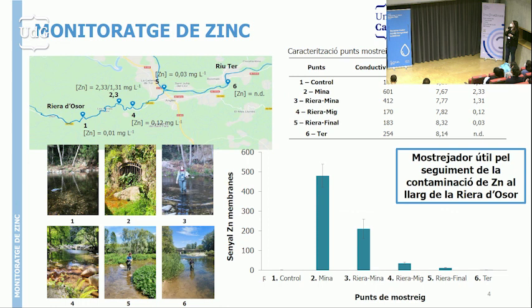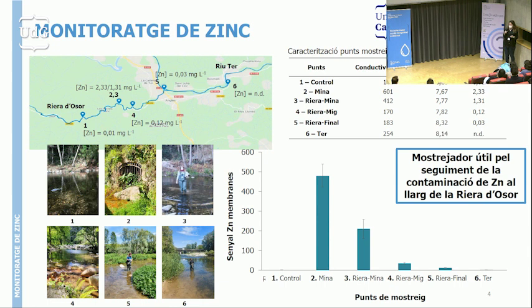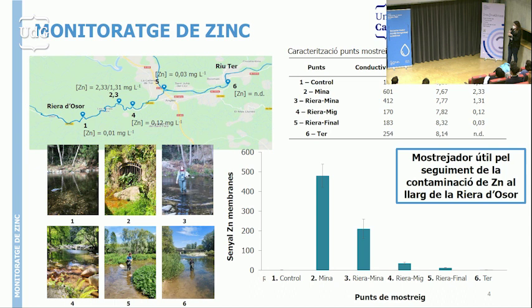Un altre cas és el monitoratge de zinc a la riera d'Ozó. Hi ha un punt d'aquesta riera on s'aboca l'aigua que prové de la mina i que té una concentració alta de zinc. Durant el mostreig tenim un punt de control on la concentració de zinc ja és no detectable, un punt de la mina amb una concentració aproximadament de 2 ppm de zinc, i les concentracions van baixant fins a arribar al riu Ter. Vam posar mostrejadors de zinc amb membranes funcionalitzades en diferents punts de la riera d'Ozó i un punt final al riu Ter, i els resultats van mostrar exactament el que esperàvem: no vam detectar zinc a la zona de control, a la mina vam detectar la senyal més alta i va anar disminuint fins als mostrejadors del riu Ter.